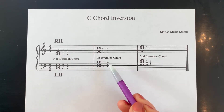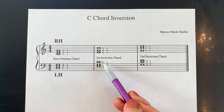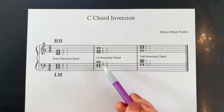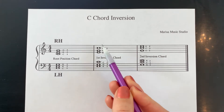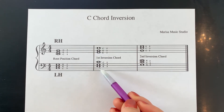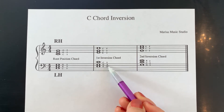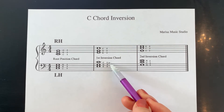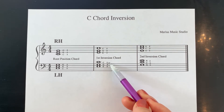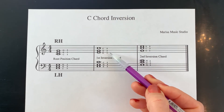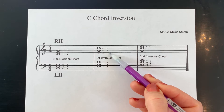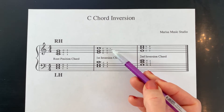Here we have the chord inverted for the first time, so the C is put on top and the E is on bottom. In the left hand we have five on E, three on G, one on middle C. In the right hand, we have one on E, two on G, five on high C.